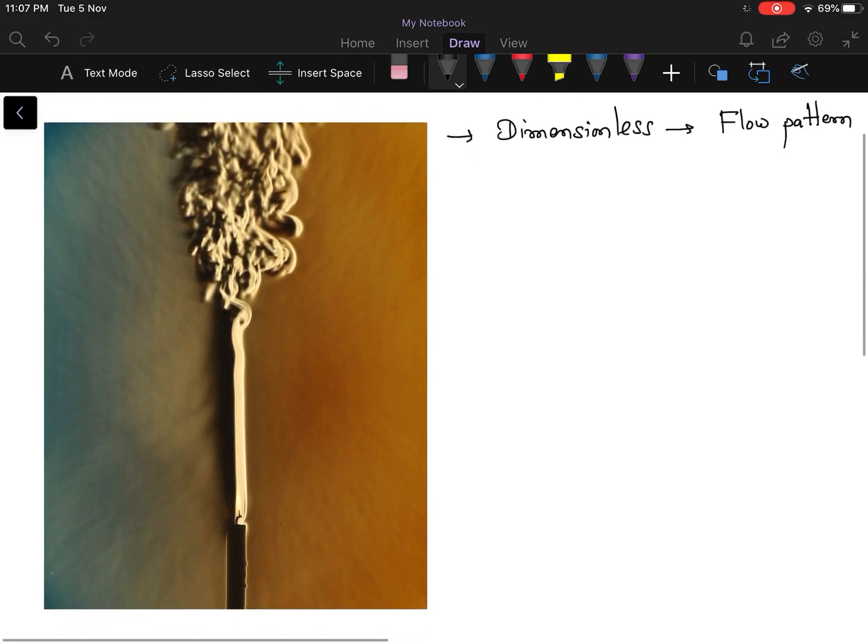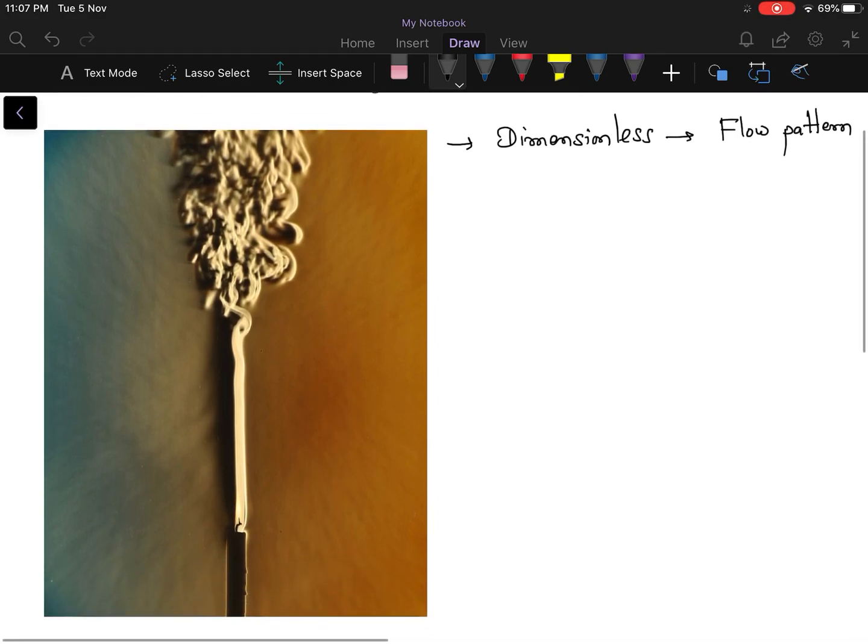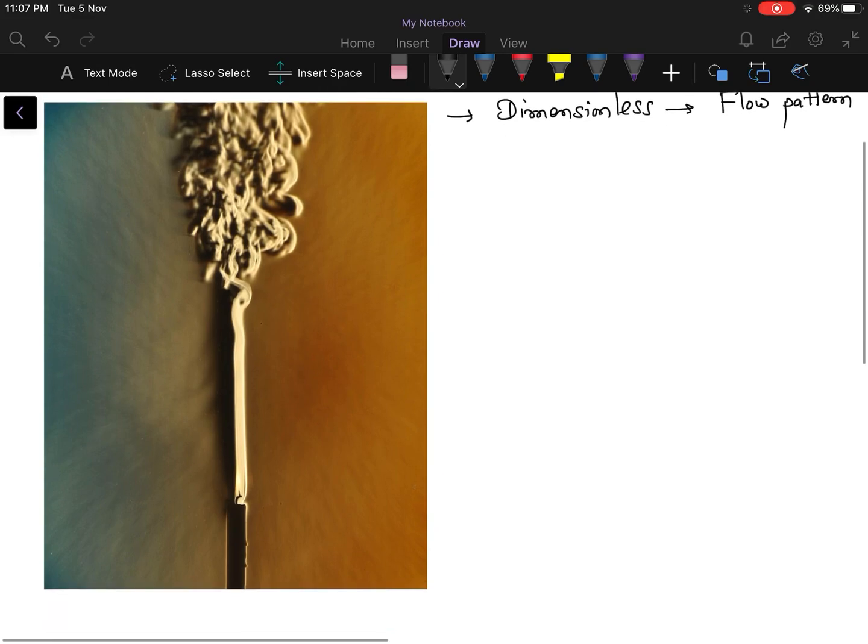So let us take an example of a candle. This is a typical photo of a candle that is burning. Here you can see a transition. Here the flow is quite uniform and here the flow is quite here and there. At low Reynolds number the flow tends to behave like